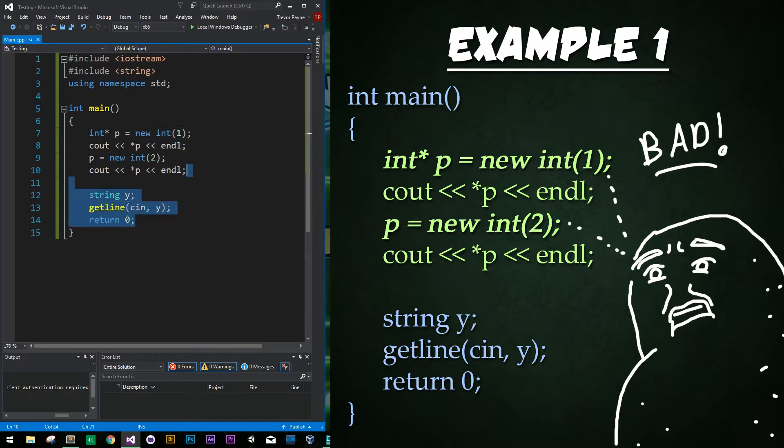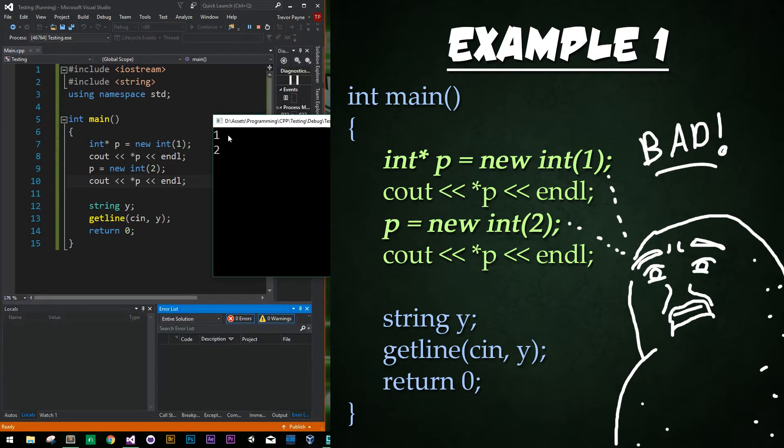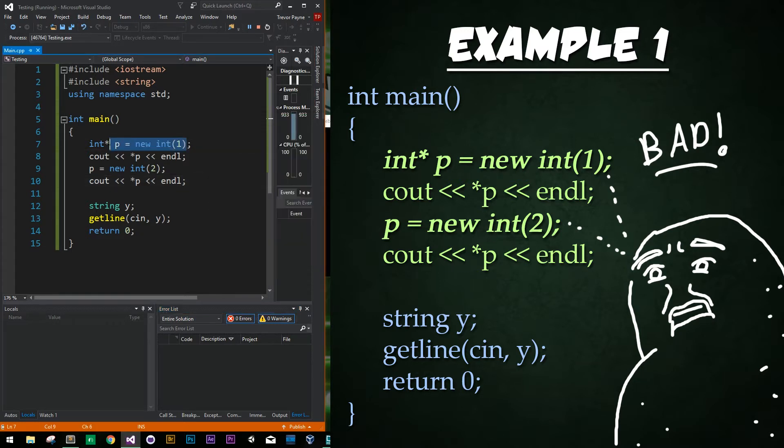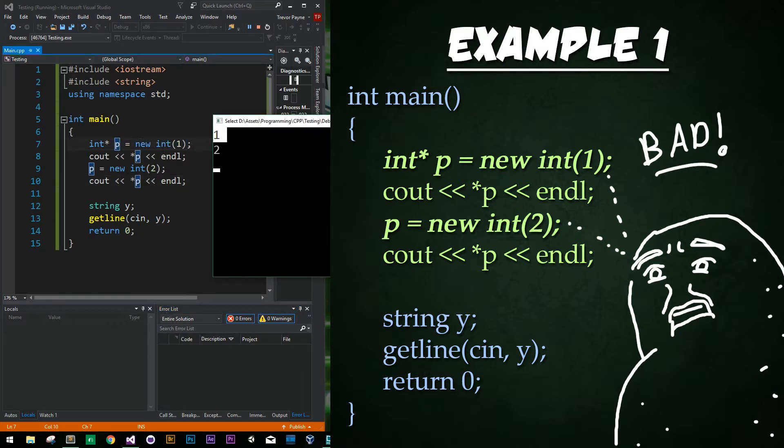So what happens to the old value that we just created? It's been pushed into memory but we don't have anything to remove it from memory. Instead we point our pointer to a new place in memory all together. So what happens to it? Well let's just go ahead and run our code and find out. Alright so now that we've run our program we get one being output which is the first instance that the pointer is pointing to and then we have two being output right here.